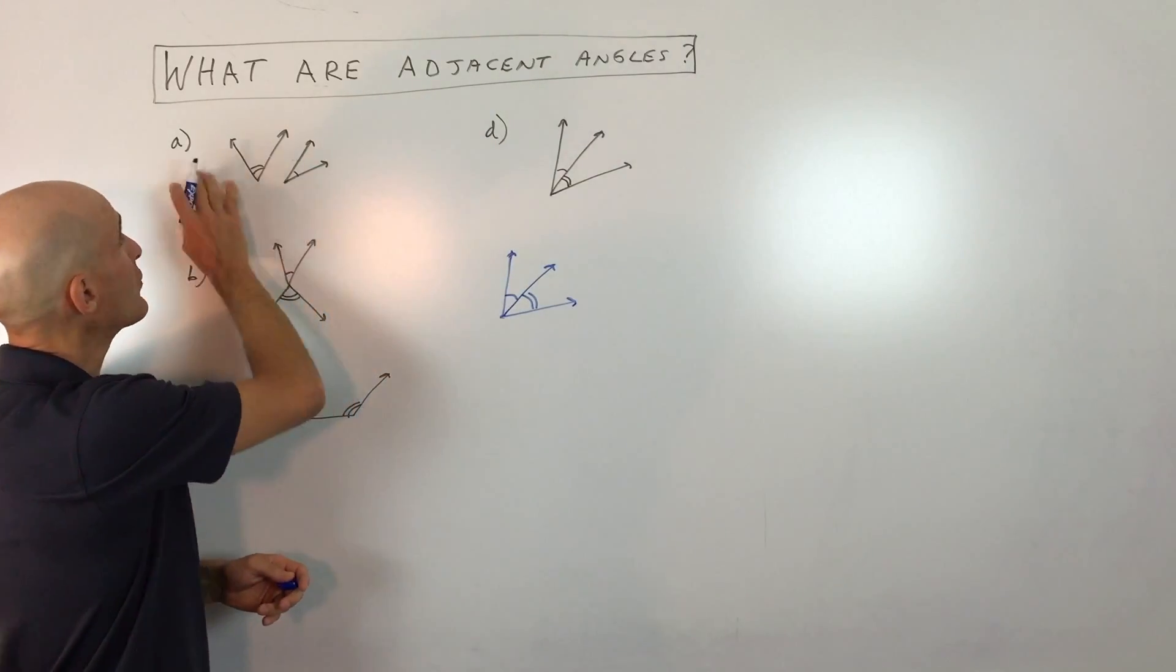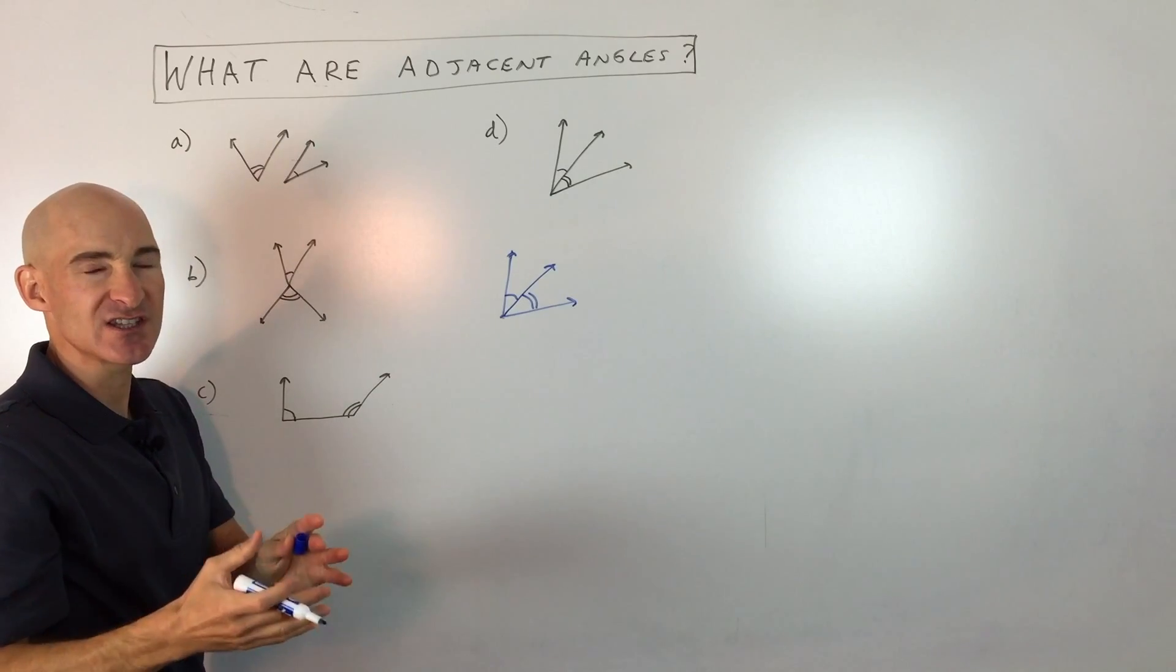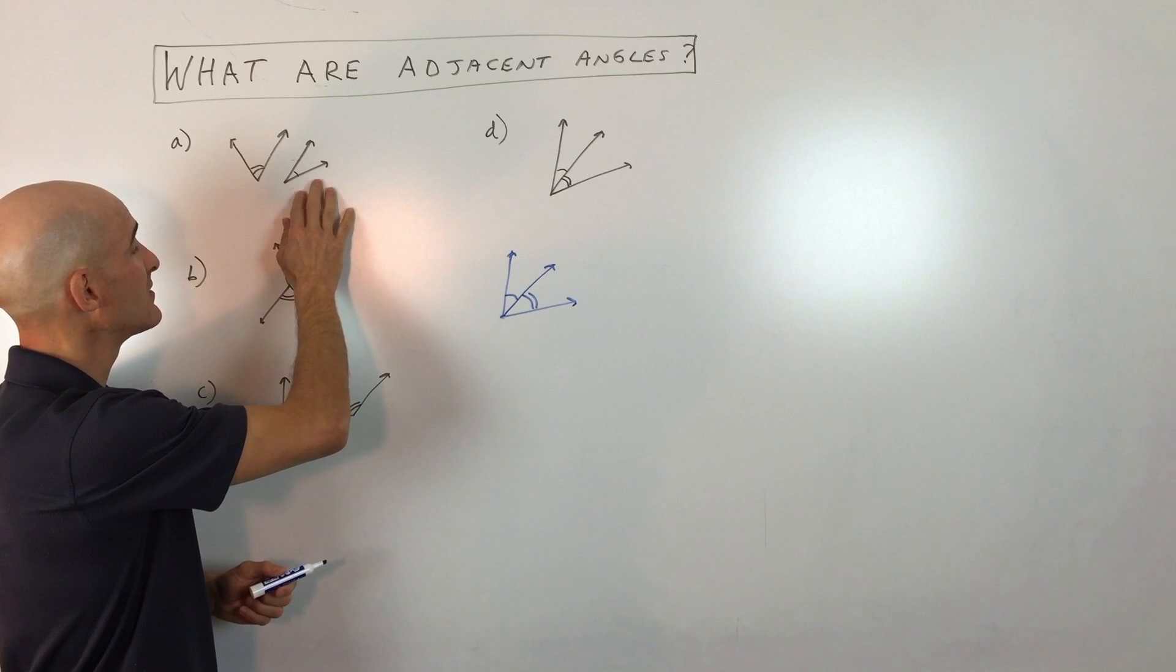So let's look at the common mistakes. So in letter A, it's true that these angles are near one another, sort of adjacent, but not in the strict sense of what we mean when we talk about adjacent angles. So these are not adjacent.